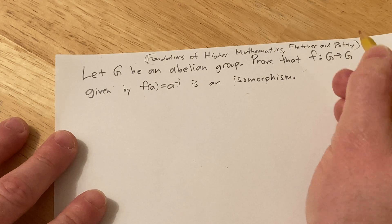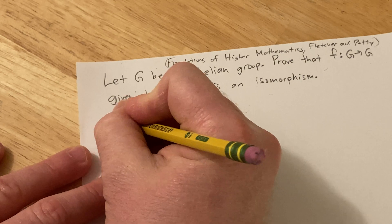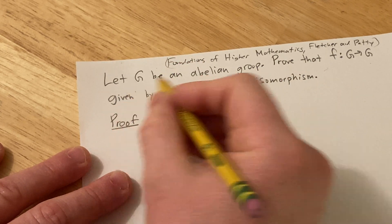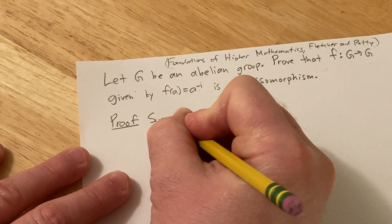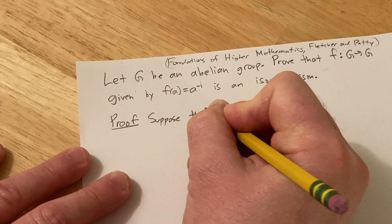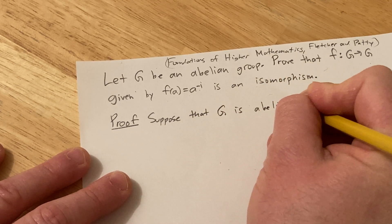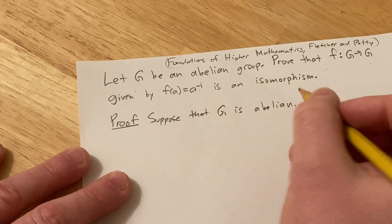Okay, so there's a lot of stuff going on in this problem so I think I'm just going to do it. So we're told that G is an abelian group, that's our assumption, so suppose that G is abelian. I have not done this problem yet by the way so I'm just going to try to do it here, and we have to prove that it's an isomorphism.